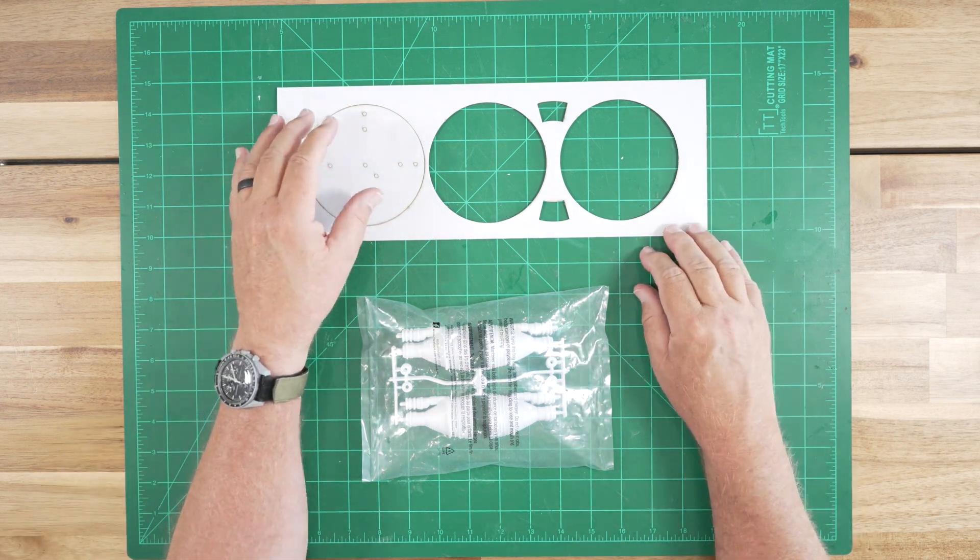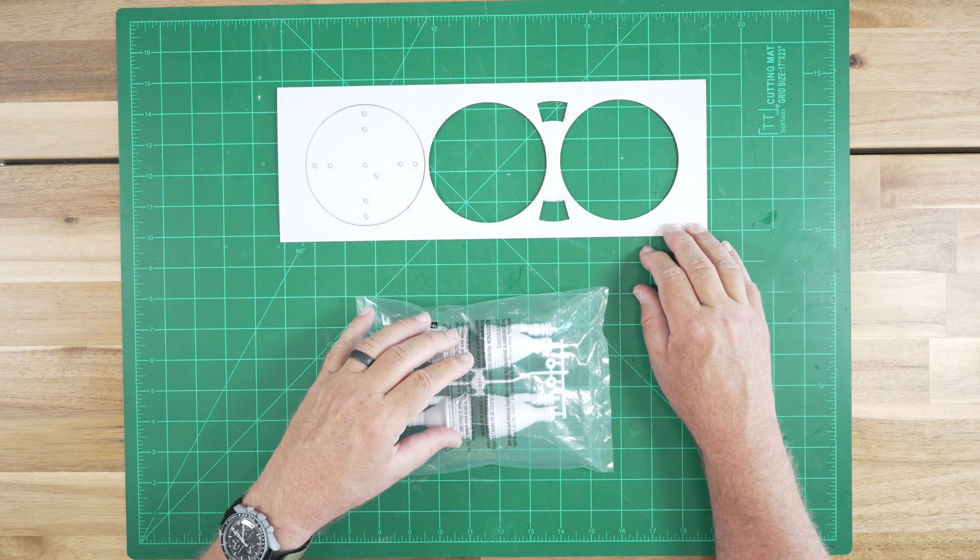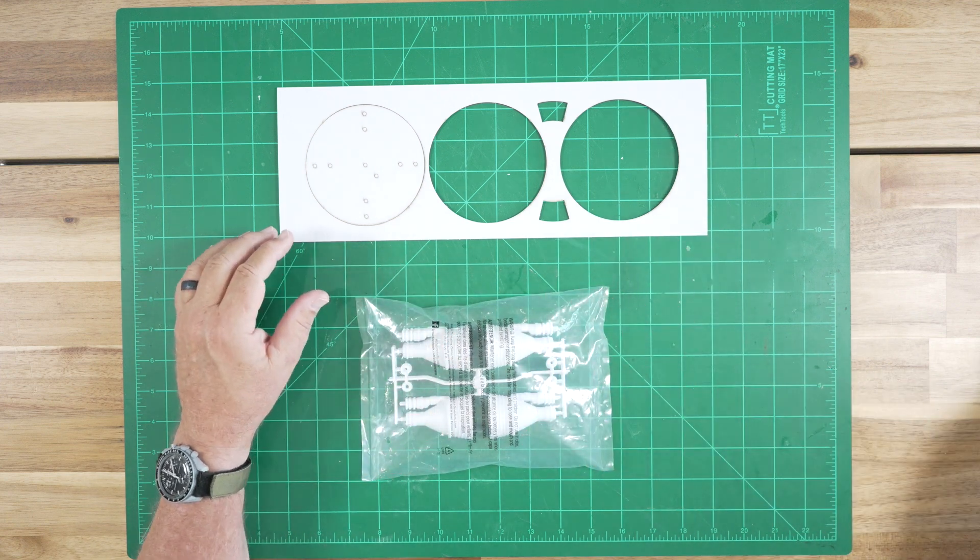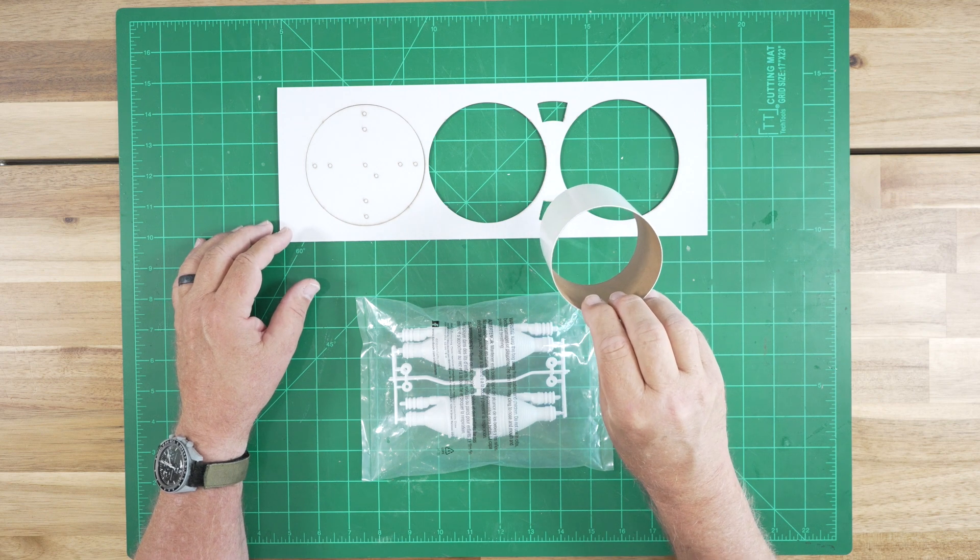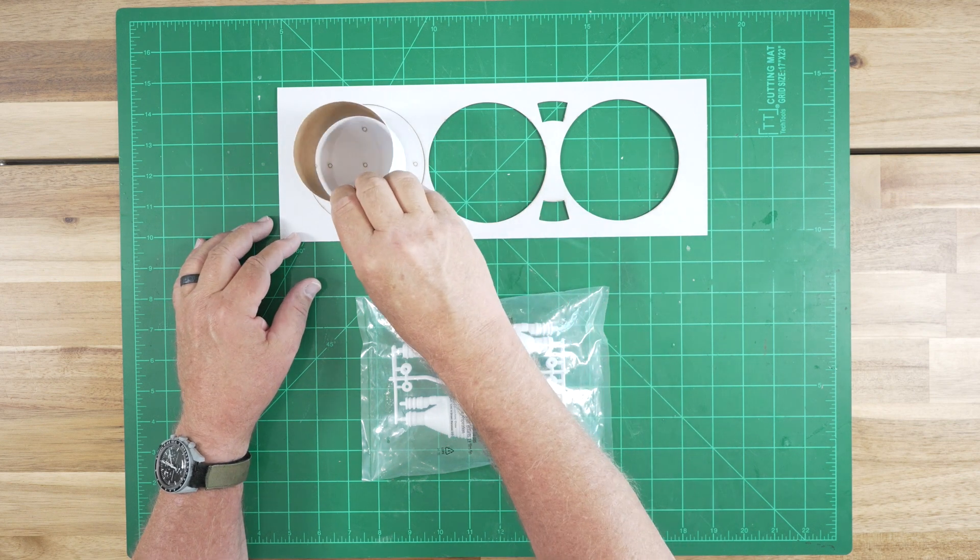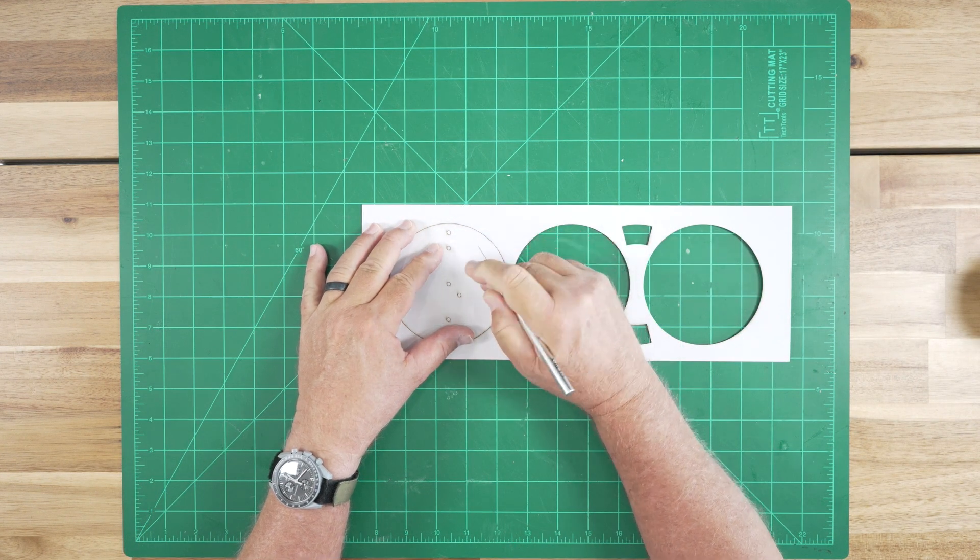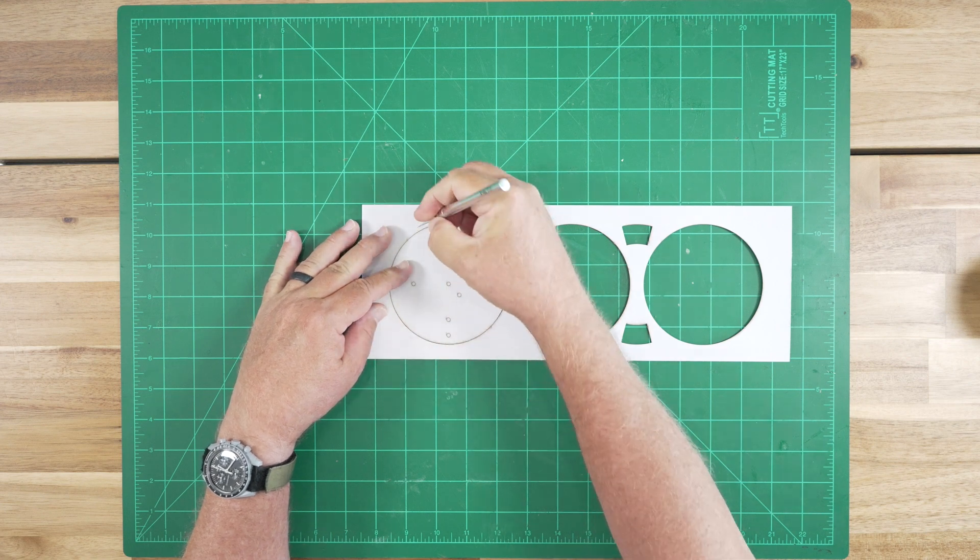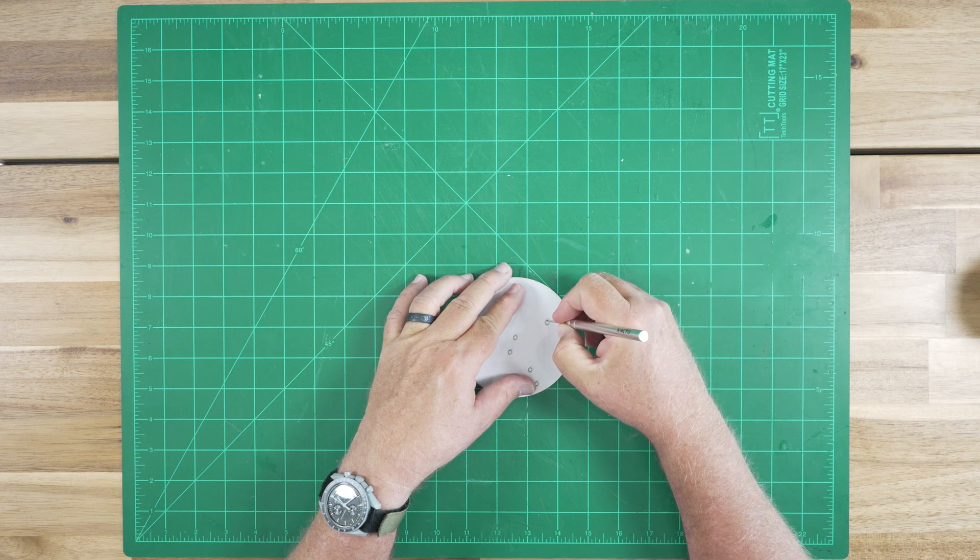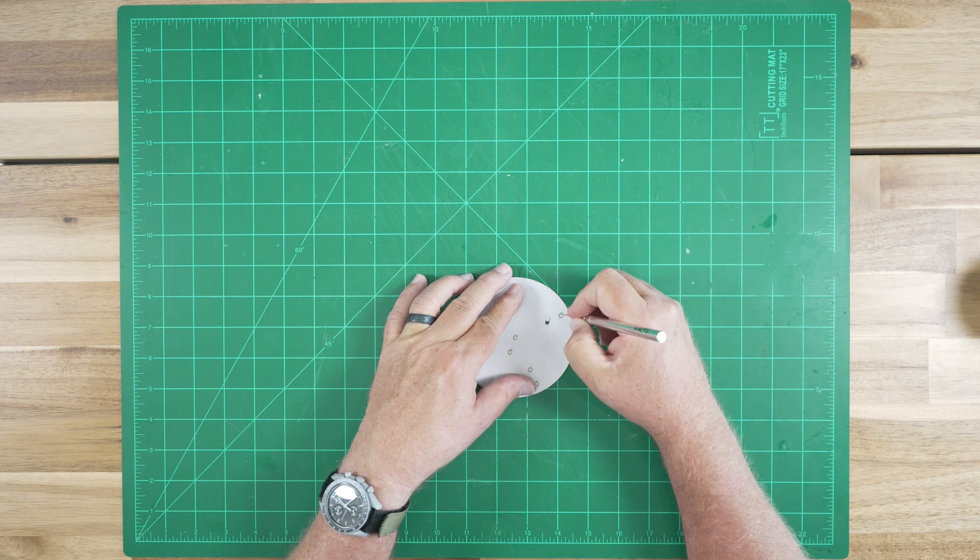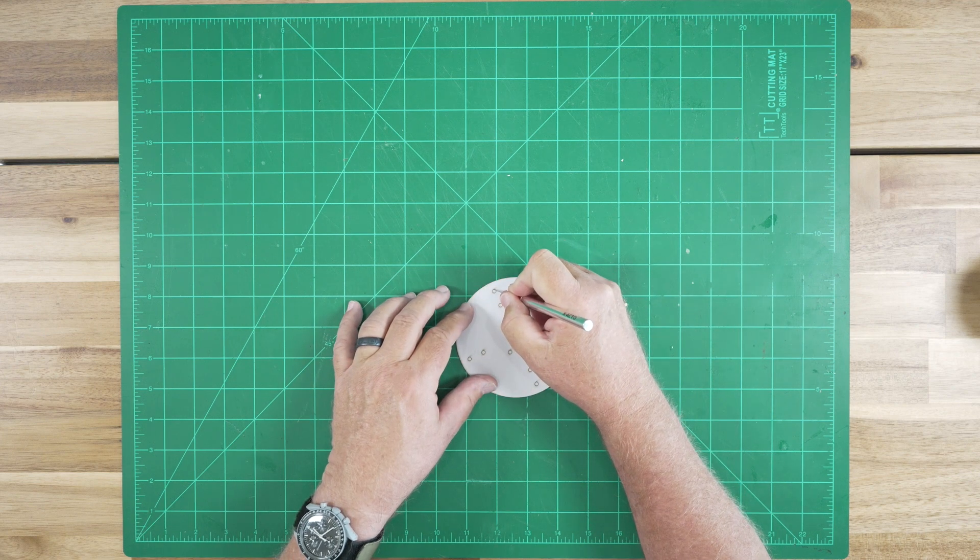For this step, we will need the base for the nozzle assembly, the nozzle parts themselves, and when that's complete, we'll add this tube section which acts as a spacer between the aft centering ring and the nozzle base. We'll start by removing the card stock nozzle base from the backing sheet and then clearing all of these tiny little holes into which the nozzles will be mounted. I'm using a number 11 blade here.